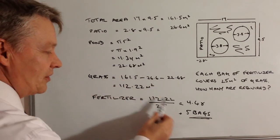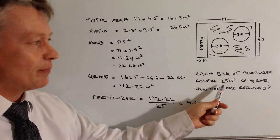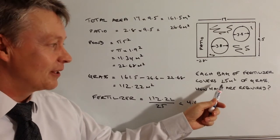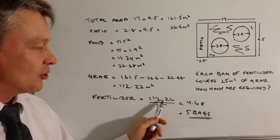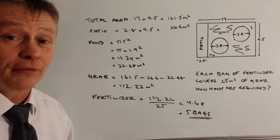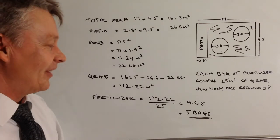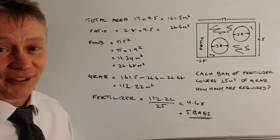Okay, take that away and then you've got this division at the end because each bag of fertilizer covers 25 meters squared. Divide that into the total area of grass that you've got and that should give you then five bags in total.